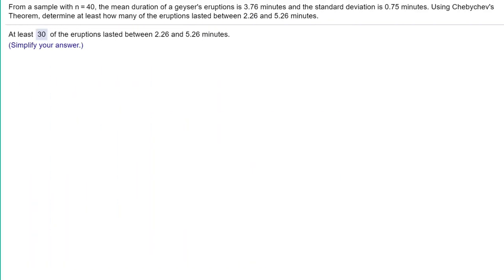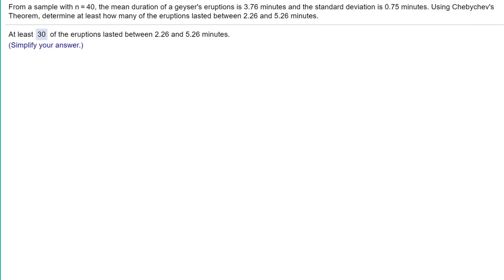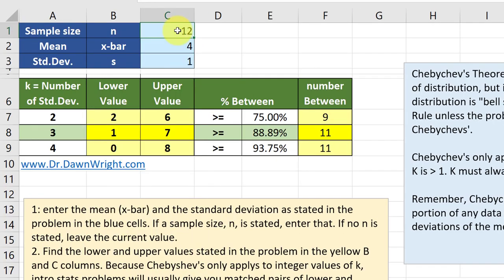On another problem here, we are trying to find out how many times a geyser erupted that lasted between 2.26 and 5.26 minutes. We enter the data: n equals 40, the mean equals 3.76, and the standard deviation equals 0.75 minutes. The calculator updates and we can see those values in k equals 2, and the number is 30.